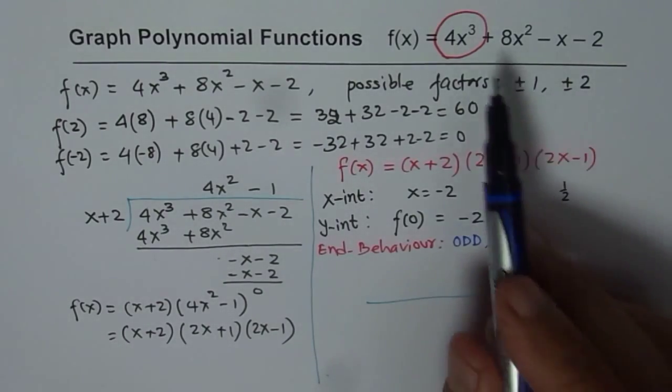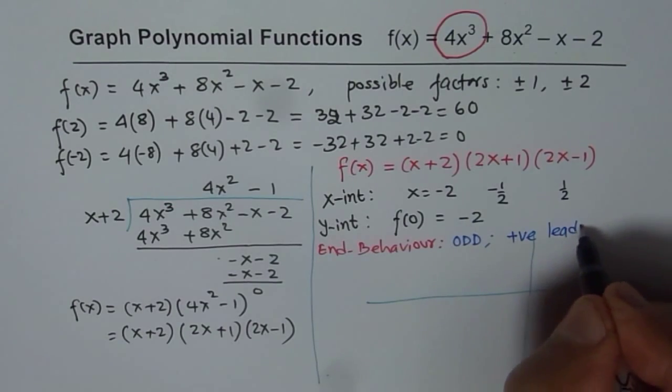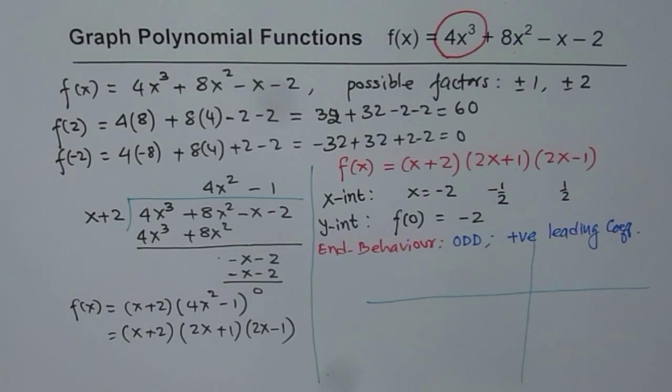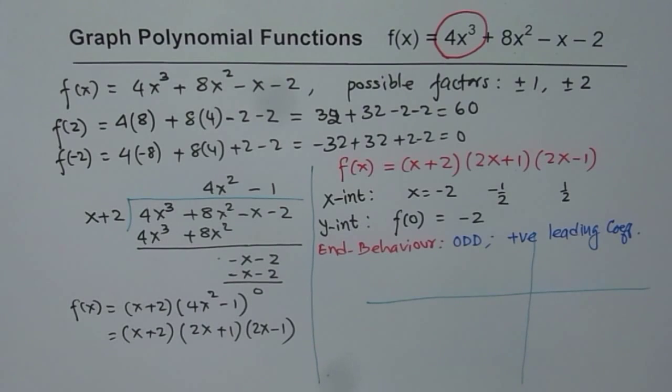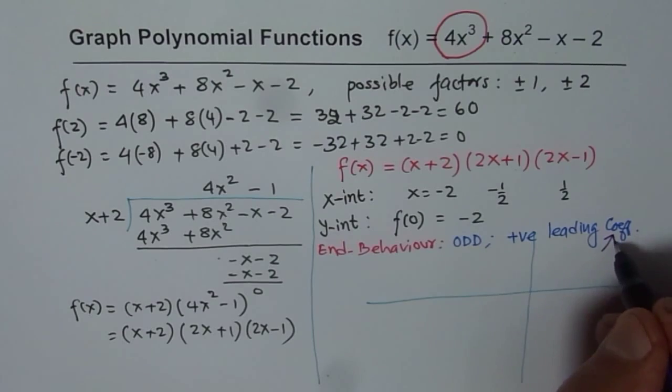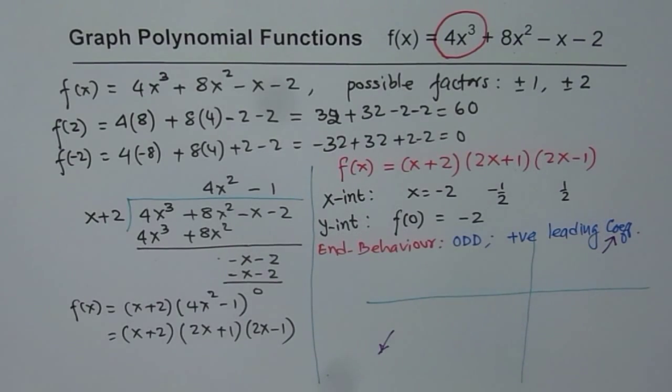And second important thing which you see is positive leading coefficient. So these are two important things which we notice. That means, how is the end behavior? So end behavior for this function should be, when we say positive leading coefficient, that means right side is up. Right side up for positive. Odd means opposite ends. So odd means opposite ends. That is the end behavior.